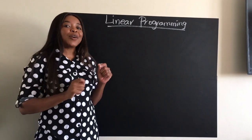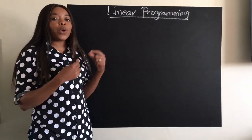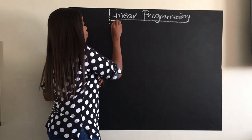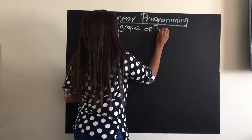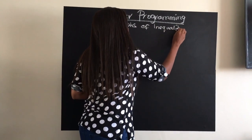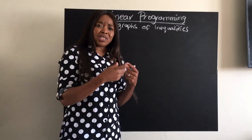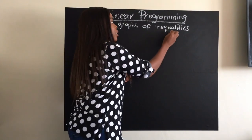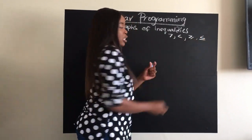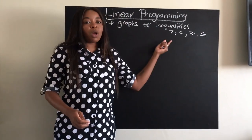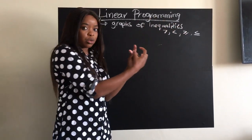Good day everyone. Today we are going to look at linear programming. We are going to be looking at drawing graphs of inequalities. When we talk about inequalities, we are talking about sort of equations, but instead of an equal sign, we have symbols like greater than, less than, greater than or equal to, or less than or equal to. These are the symbols we are going to have in our inequalities.